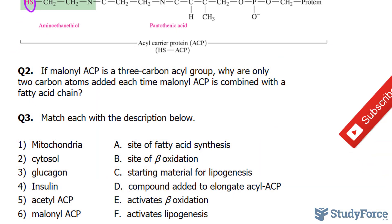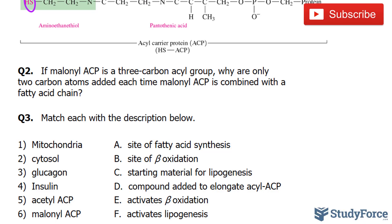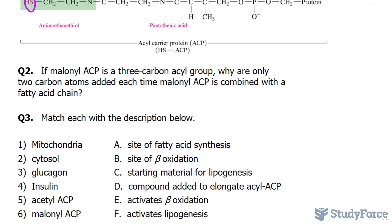Let's move on to the third question: match each item with the description below. The first being mitochondria. As mentioned earlier, mitochondria is not the site of fatty acid synthesis — that's the cytosol, so we can cross out A for mitochondria. It is beta-oxidation, the breakdown of a fatty acid, that occurs in the mitochondria, so mitochondria matches B. Cytosol is the site of fatty acid synthesis, so that's A.